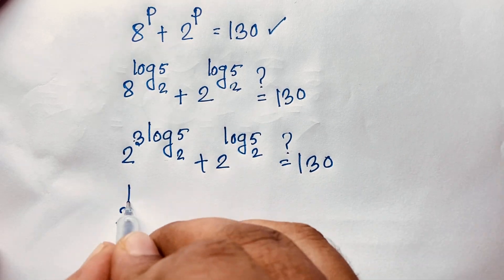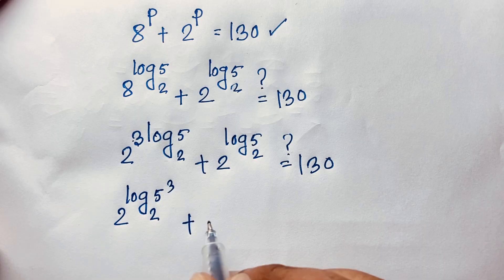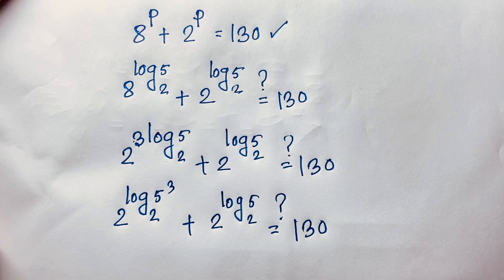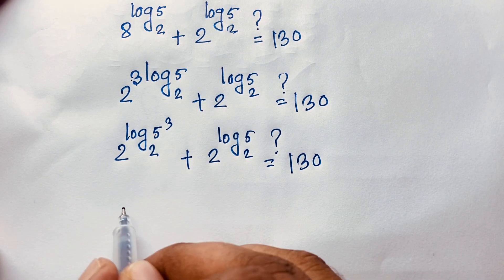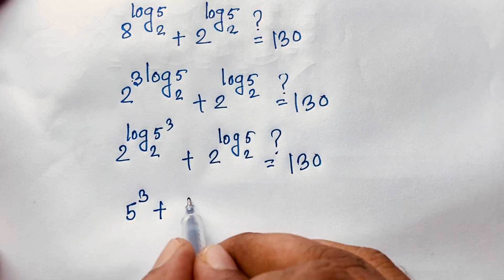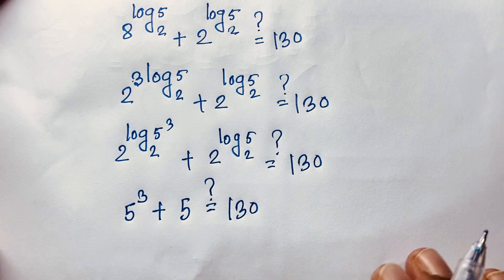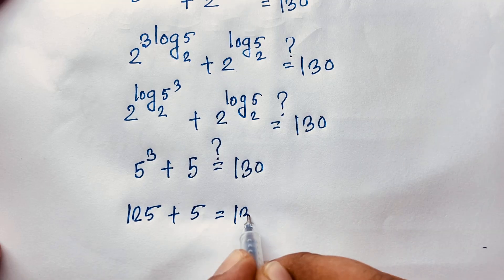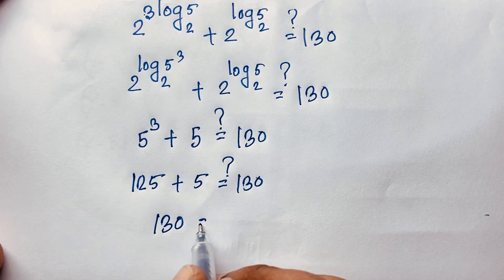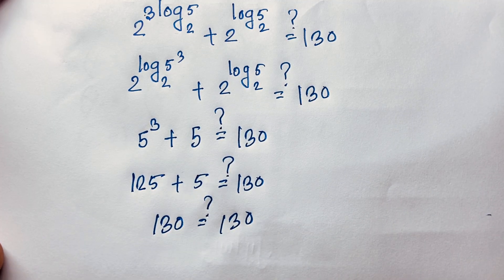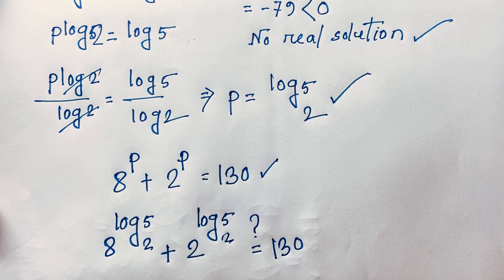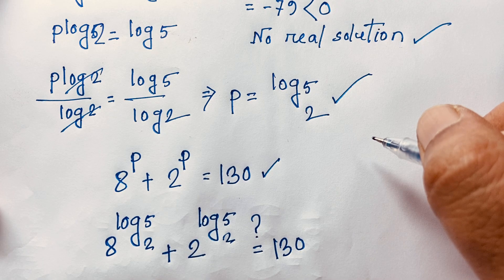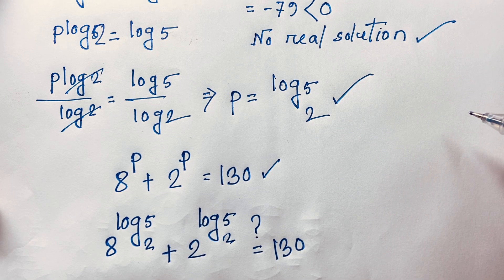This simplifies to 5³ + 5 = 130, by logarithm rules (2^(log₂5) = 5). So 125 + 5 = 130, and 130 = 130. Left-hand side equals right-hand side, confirming that p = log base 2 of 5 is our final answer. Thank you all — if you enjoyed this video, please subscribe to my channel. Goodbye, take care.